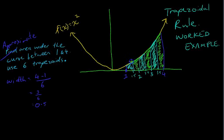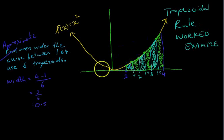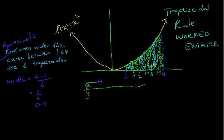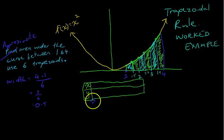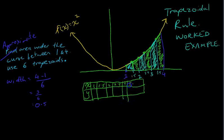Now we really need to know what each of these points are. Because if we're going to find the area of each trapezoid, we need to know this length here and this length here. The easiest way to do that is to do up a table of x and y values. We're going to need to do them for everything: 1, 1.5, 2, 2.5, 3, 3.5, and 4.